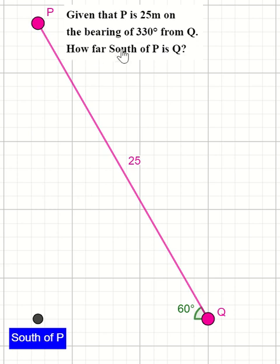So it says, how far south of P is Q, which means when you stand at south of P, what's the distance or what distance will you move or will you cover to get to Q? When you're standing at south of P, what distance will you cover to get to Q?